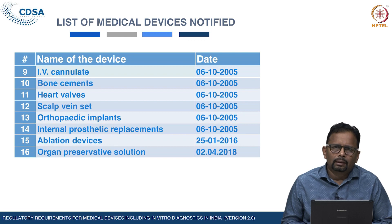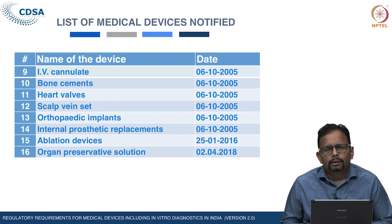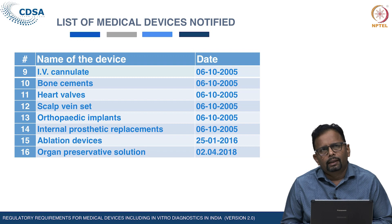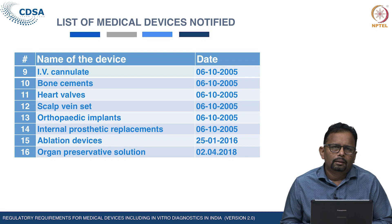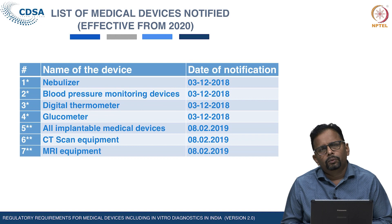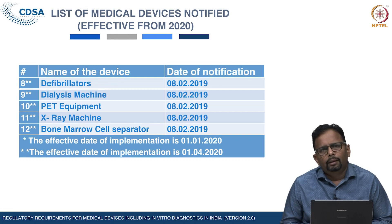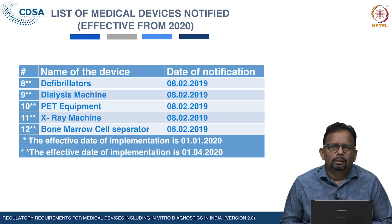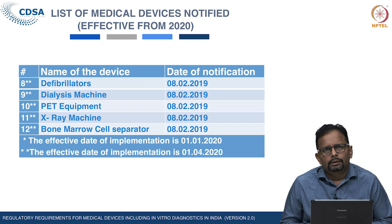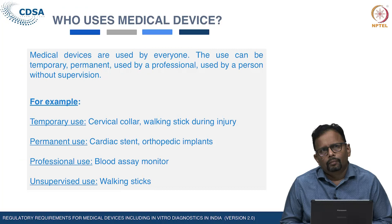So 16 categories of medical devices are currently under regulation. In December 2018, four additional categories of medical equipment were notified, and in February 2019, eight new categories were notified with an implementation date of January 2020. Certain time periods have been given to stakeholders for implementation of regulations for these new categories.